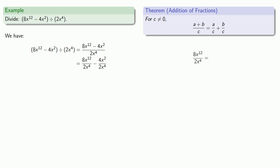8x^12 over 2x^4—because numerator and denominator are products, we can split this up into a product of fractions and then simplify. Similarly, for x^2 over 2x^4, numerator and denominator are both products of terms, so we can rewrite this as a product of fractions and simplify.